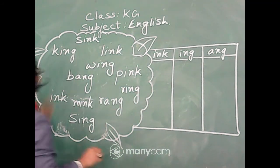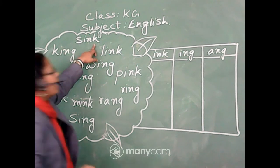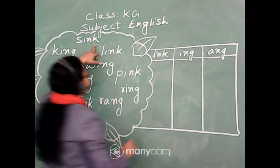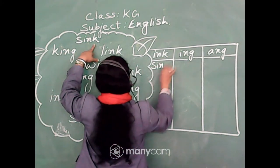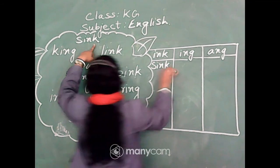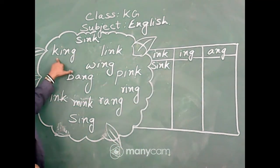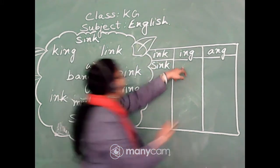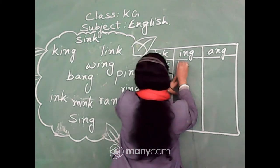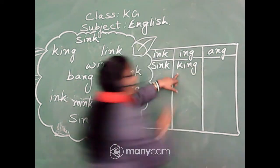So here comes s-i-n-k. It's an -ink word, so I am going to write sink in the ink column. Next is king, k-i-n-g — that's an -ing sound, so here I can write king in the ing column.